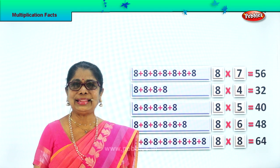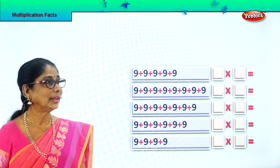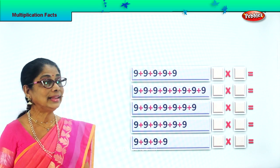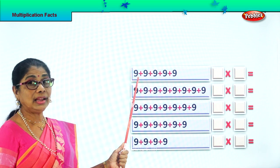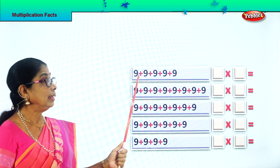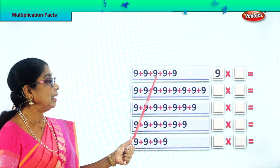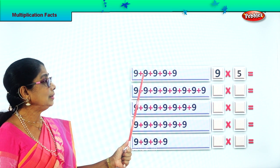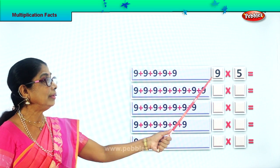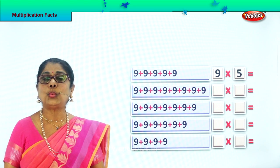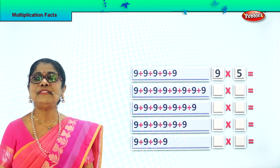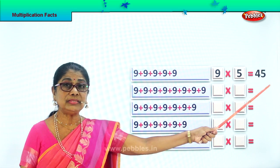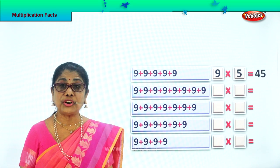Let's look at another. Nine. Here, how many times? Nine plus nine plus nine plus nine plus nine. Nine into 1, 2, 3, 4, 5. Nine into five. What is nine? Nine fives are forty-five. Very good. Nine fives are forty-five.